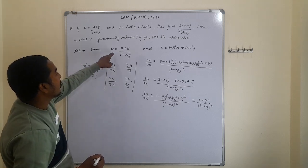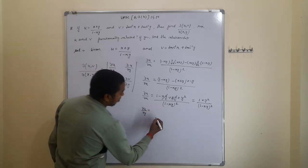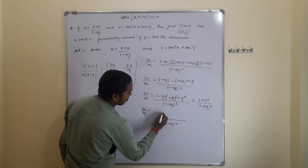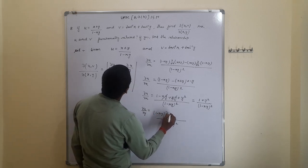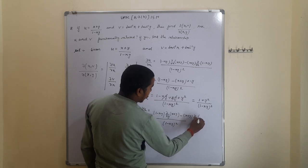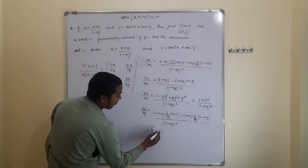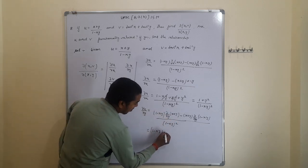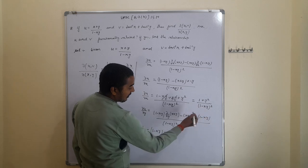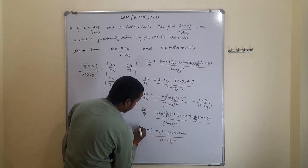Next, we find ∂u/∂y using the quotient rule. The numerator is: (1 - xy) · ∂(x + y)/∂y minus (x + y) · ∂(1 - xy)/∂y. Differentiating (x + y) with respect to y gives 1, and differentiating (1 - xy) with respect to y gives -x. This gives: [(1 - xy)(1) - (x + y)(-x)] / (1 - xy)².